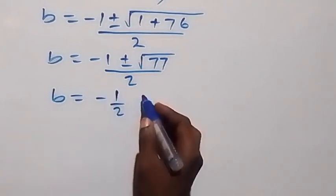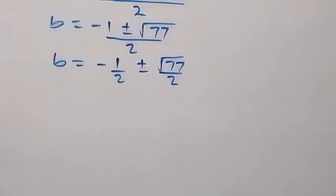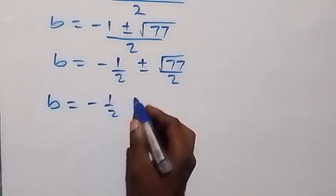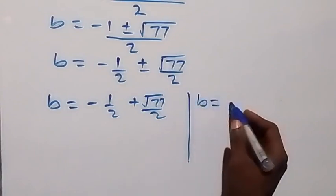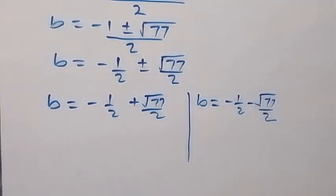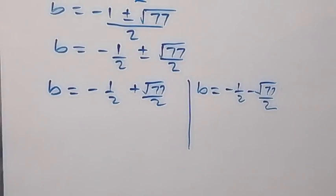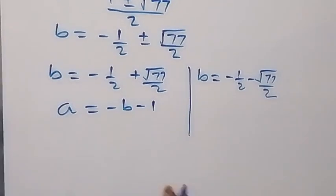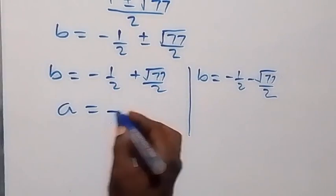We can write this as b equals minus one-half plus or minus root 77 over 2, separating into two fractions. So we have two possible values of b: either b equals (minus 1 plus root 77) over 2, or b equals (minus 1 minus root 77) over 2. The corresponding value of a is found using a equals minus b minus 1, which is also written as a equals minus 1 minus b.